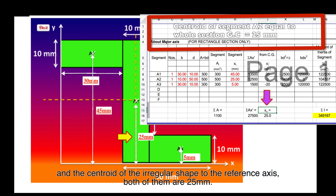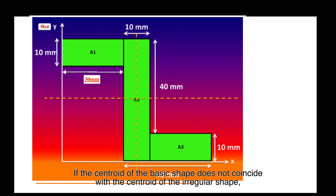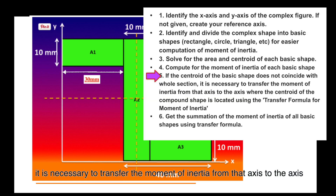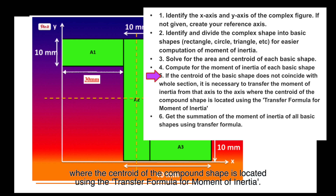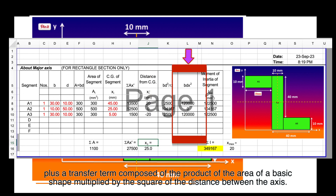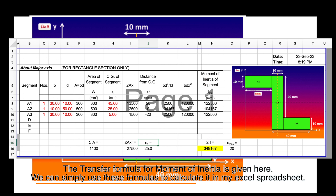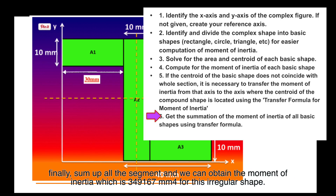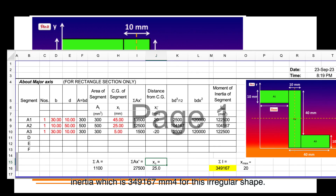If the centroid of the basic shape does not coincide with the centroid of the irregular shape, it is necessary to transfer the moment of inertia from that axis to the axis where the centroid of the compound shape is located, using the transfer formula for moment of inertia. The moment of inertia with respect to any axis in the plane of the area equals the moment of inertia with respect to a parallel centroidal axis, plus a transfer term of the area multiplied by the square of the distance between the axes. We can apply this formula in the Excel spreadsheet. Finally, summing all segments, we obtain the moment of inertia of 349,167 mm⁴ for this irregular shape.